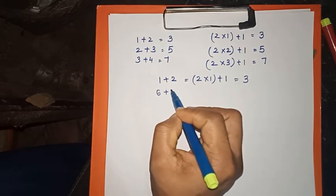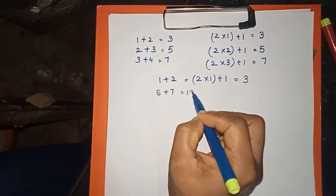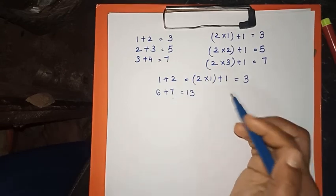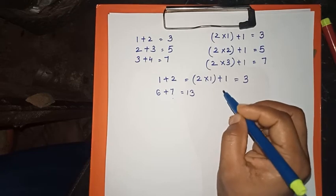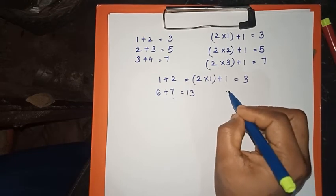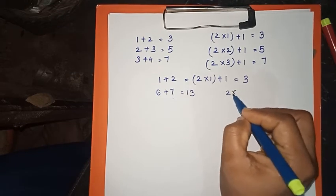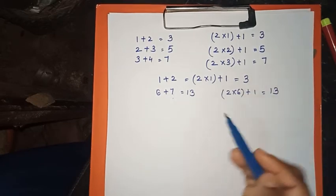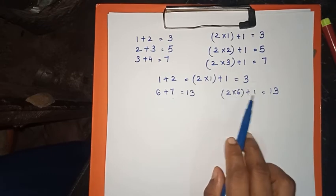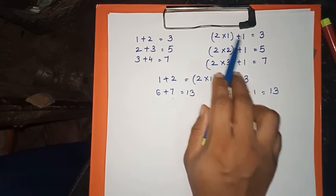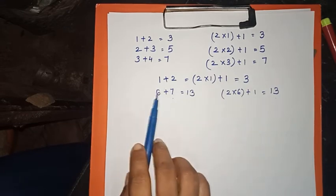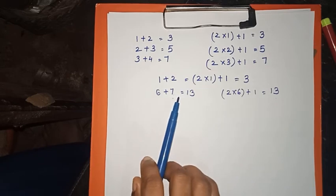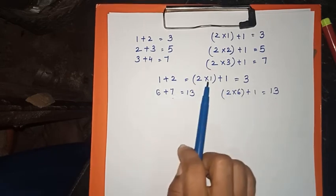For example, 6 plus 7 is equal to 13. The next number after 6 is 7, so 6 plus 7 is 13. How do we get this? We use 2 into 6, which gives 12, plus 1 equals 13. So the formula is 2 into n plus 1 for consecutive numbers.